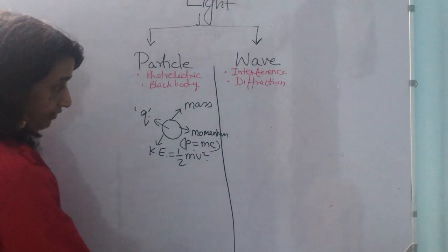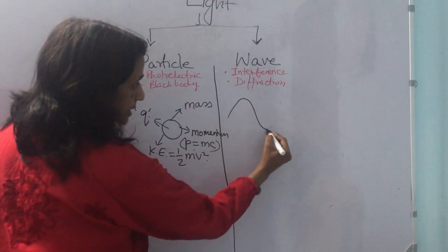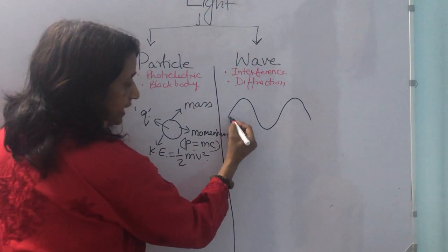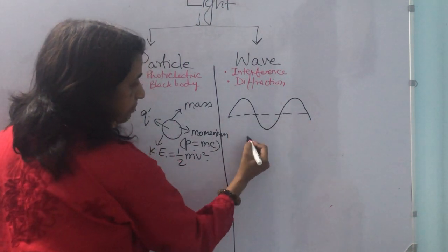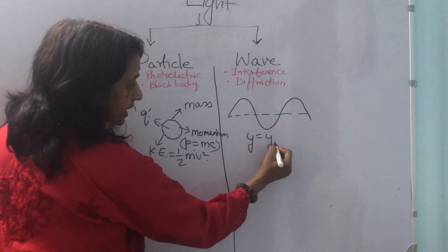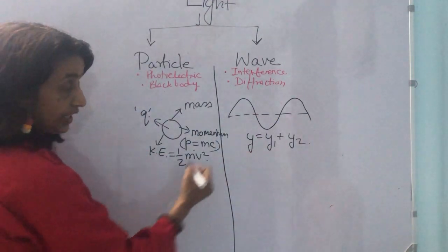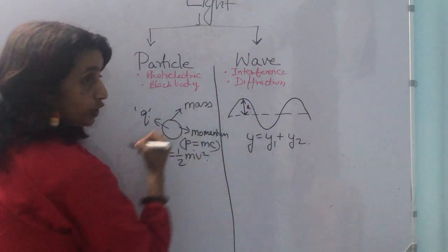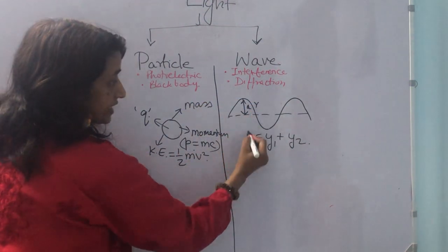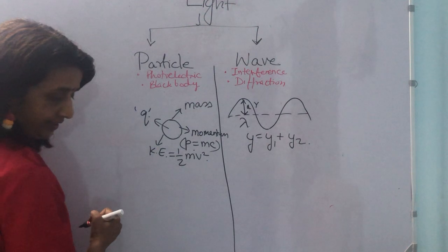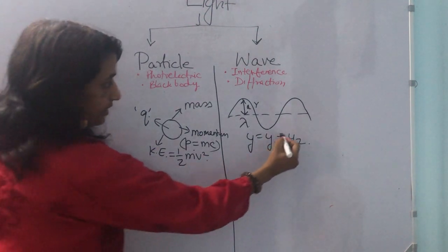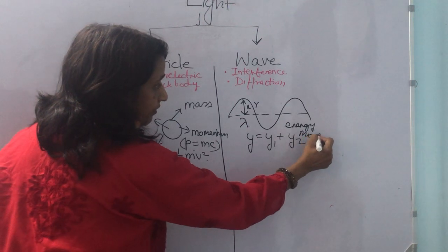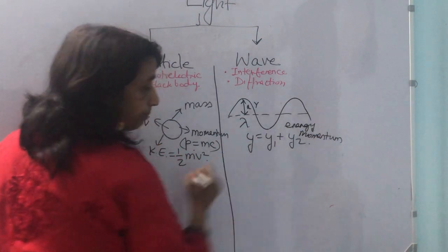Whereas a wave, wave will be spread out in a medium. Wave can be, using the principle of superposition, we can even combine two waves. Wave will be specified with amplitude, frequency, wavelength, energy, momentum, etc. So this is wave nature and this is particle nature.